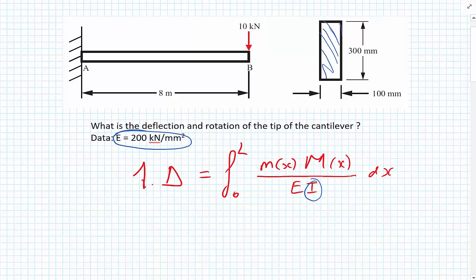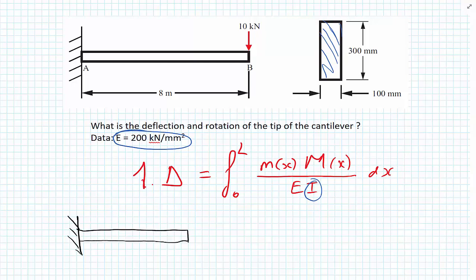With this method, where we place the unit load is at the point that we want to know the deflection, in the direction that we wish to find the deflection. Drawing the cantilever, I'll place the unit load at the tip of the cantilever. In this case, I know that the cantilever will be dipping downwards, so I'll put a unit load pointing in the downwards direction.